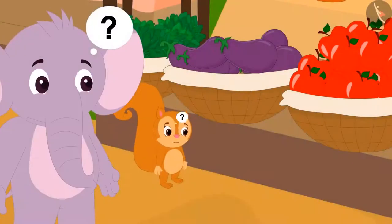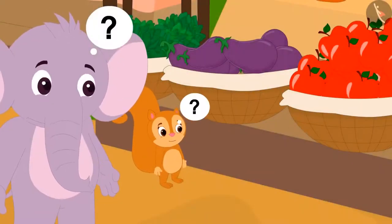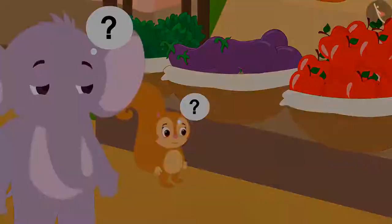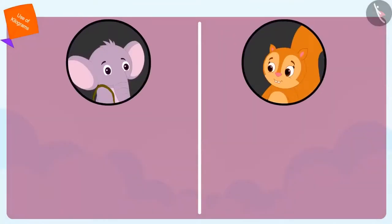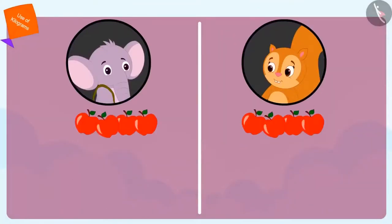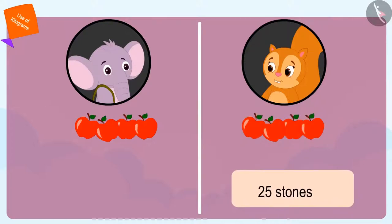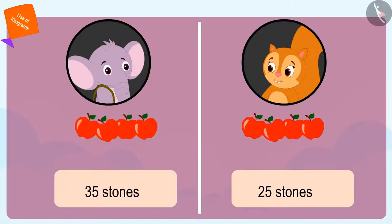Appu and Chanda were both shocked — how could this happen? Both of them bought four apples. Yet, how can the weight of Chanda's apples be equal to 25 stones while Appu's four apples weigh 35 stones?